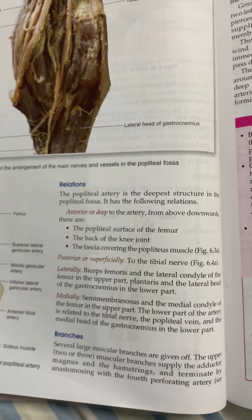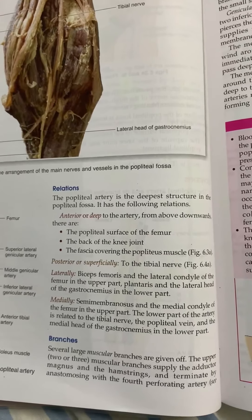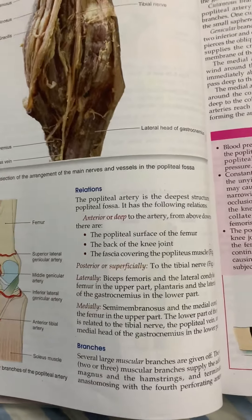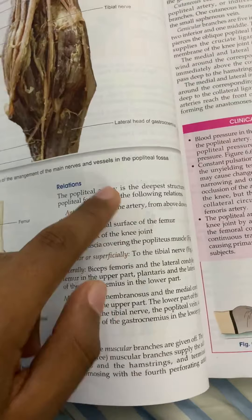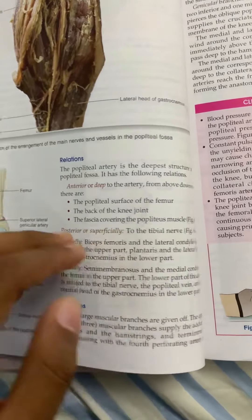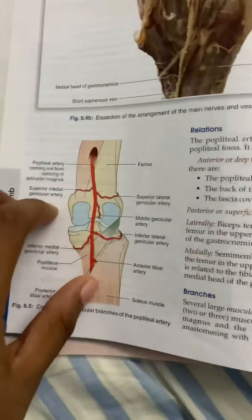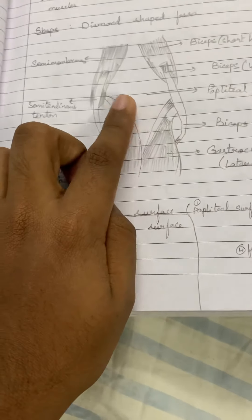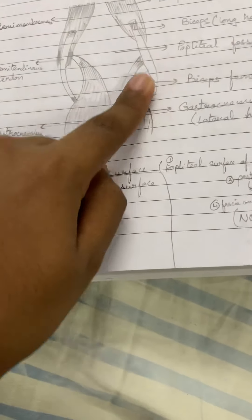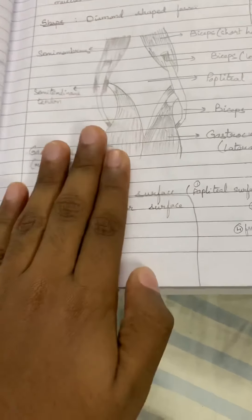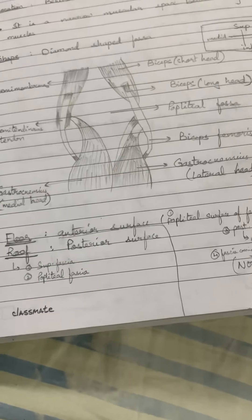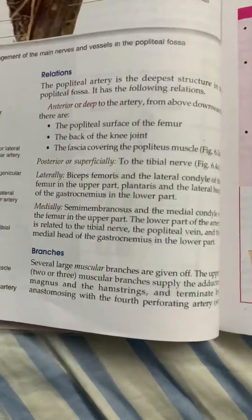Regarding relations: the popliteal artery is the deepest structure in the popliteal fossa. Anterior to the artery — that is, deep to it — we have the structures forming the floor of the popliteal fossa. Posteriorly we have the tibial nerve. Laterally we have the biceps femoris and the lateral condyle of the femur in the upper part, and the plantaris and lateral head of gastrocnemius in the lower part. On the medial side we have the tibial nerve and popliteal vein in the lower part.